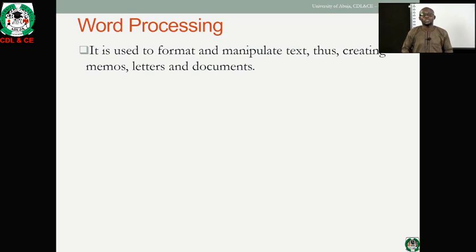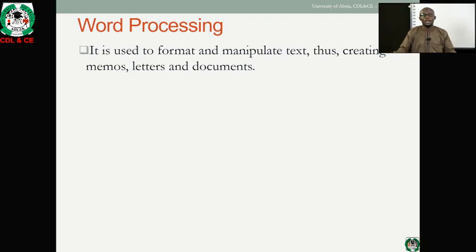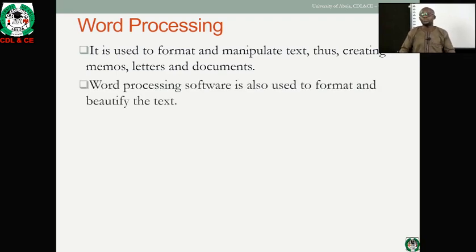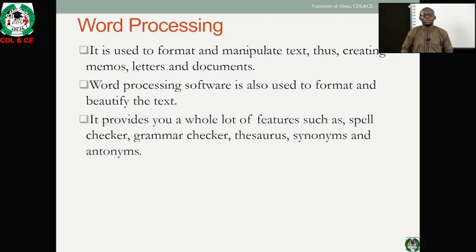Word processing software is used to format or manipulate text, creating memos, letters, and documents. For example, if you need to send your CV to an organization after seeing a job advertisement, you use word processing software to prepare your curriculum vitae. It also allows you to format and beautify your text — changing font style, background color, inserting clip art — and provides features such as spell checker, grammar checker, and a thesaurus for synonyms and antonyms.